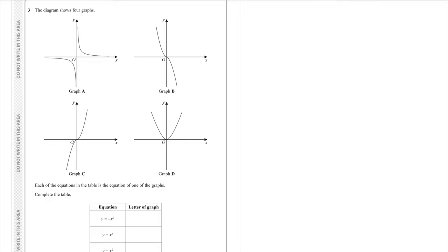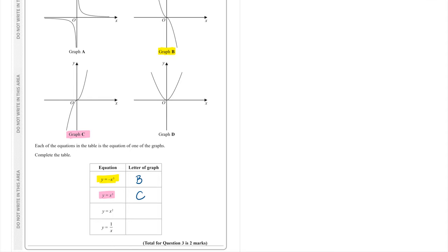Question 3. We need to match these 4 graphs with the equations listed in the table. The first equation, y equals minus x cubed, has a negative gradient so the cubic graph goes downwards — match it with graph B. y equals x cubed is a positive cubic — graph C. y equals x squared is a quadratic — graph D. And finally, the last one is graph A, a reciprocal graph.